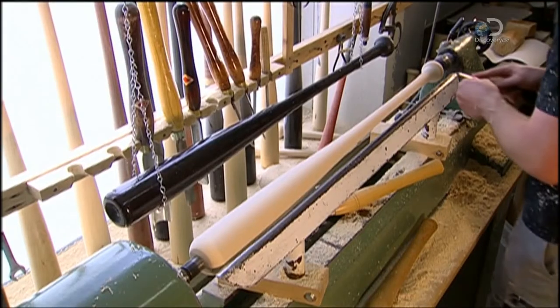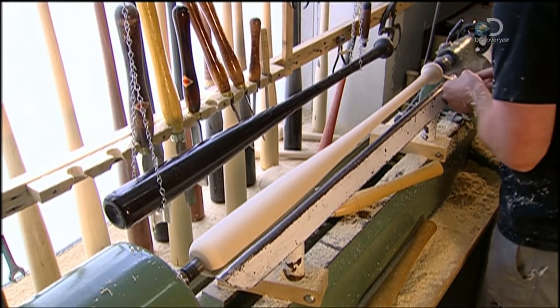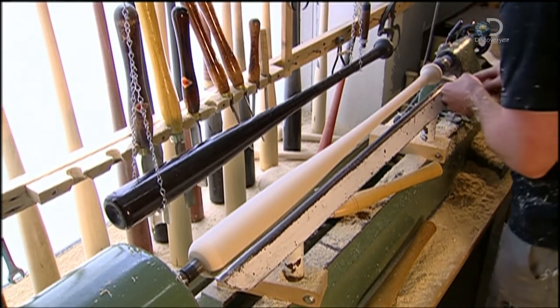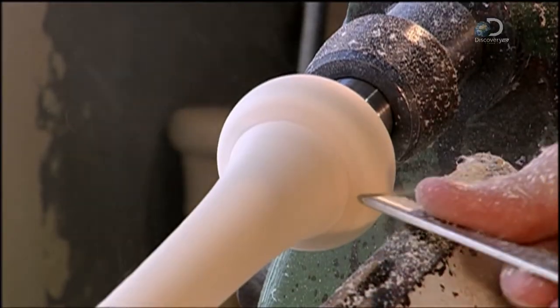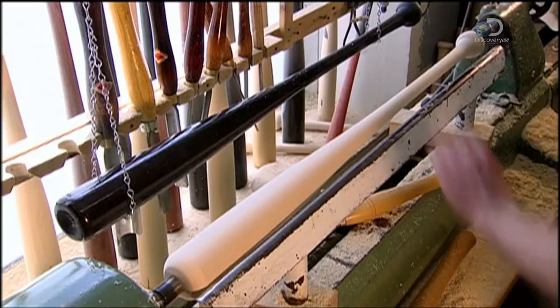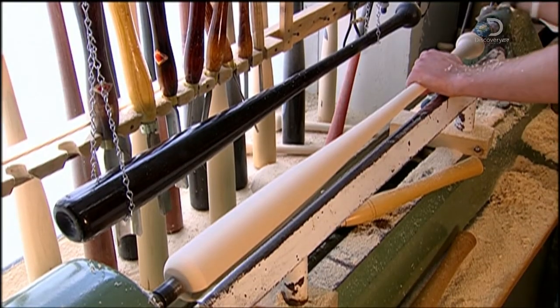The shaping of the knob is then completed using the skew chisel. Because the tool is extremely sharp, the carving is precise. The bat is now within 14 grams of its final weight.